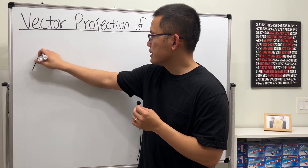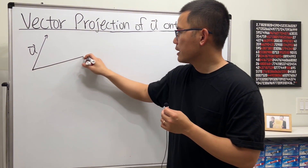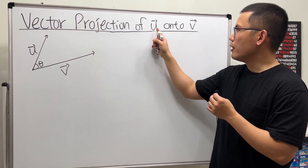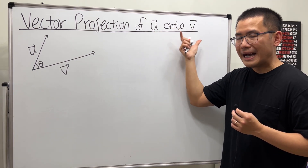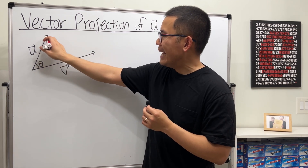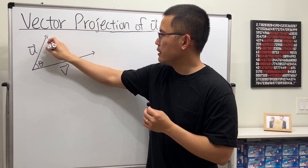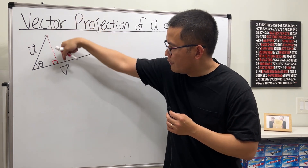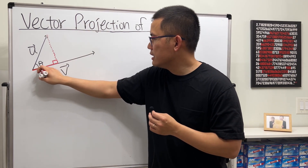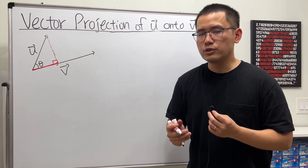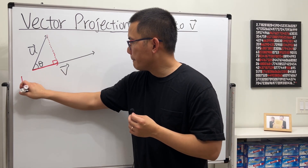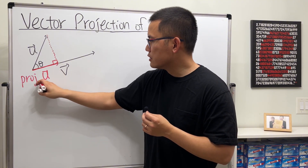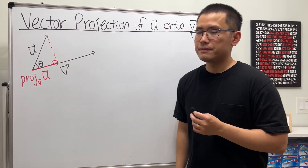I'll draw a picture for you guys. Let's say here is u, and let's say this is v, and the angle is acute. The vector projection of u onto v — keep in mind the order matters — you want to go to the end of u, and then drop a perpendicular, maybe with a dashed line. This right here has to be 90 degrees. Going from here to here is the projection. Any projection is also going to be a vector. The notation for this is proj, and we put a subscript for u onto v.